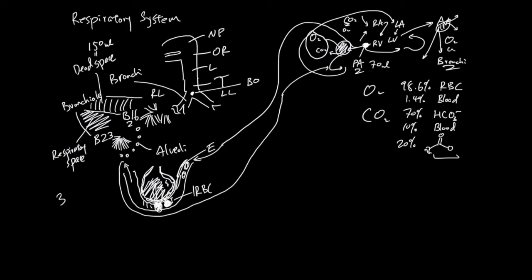Overall, there are about 300 million alveoli. Together they make up 100 meters squared of area for gas exchange.